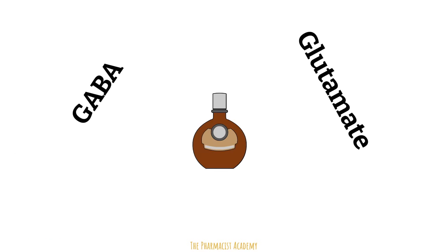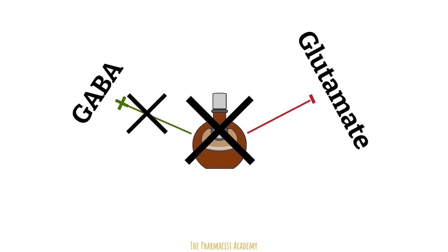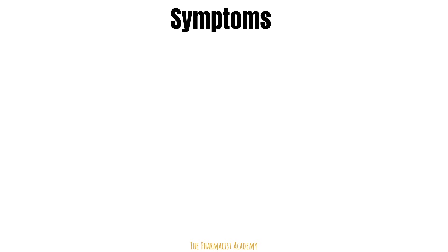Alcohol is a central nervous system depressant that not only increases the activity of GABA, but also inhibits the effects of glutamate. With chronic exposure, the body becomes reliant on the alcohol. So when the alcohol is stopped, the central nervous system becomes overexcited as the inhibition is taken away, and the body gets an excitatory overload, which results in the symptoms of withdrawal.